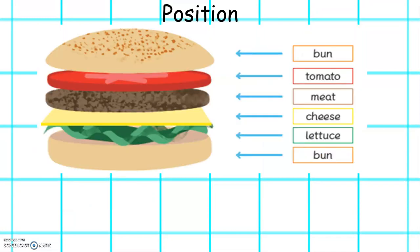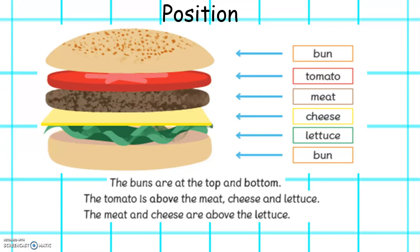Let's have a look at the picture of this burger. The buns are at the top and bottom. The tomato is above the meat, cheese and lettuce.